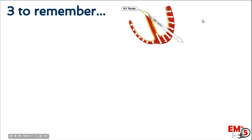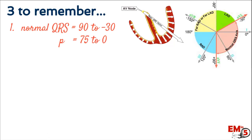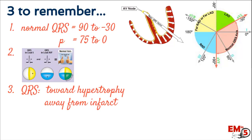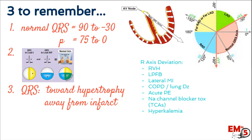Three things to remember for axis interpretation: the axis represents the average of the vectors of depolarization throughout the heart — in the ventricle for QRS, or in the atrium for the P wave. The quick tip is to look at leads 1 and AVF; if both are positive, that's a normal axis. For QRS, the axis deviates towards hypertrophy and away from infarct. For right axis deviation, also consider lung diseases such as COPD, chronic lung disease, or an acute PE.